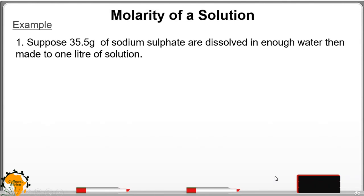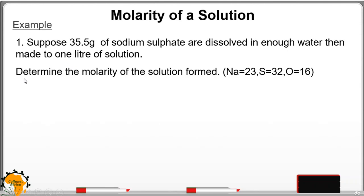For example, suppose you have 35.5 grams of sodium sulfate dissolved in enough water, then made up to 1 liter. Determine the Molarity of the solution formed. Since Molarity is the number of moles in a liter, we need to convert the number of grams of sodium sulfate into moles. Because we already have 1 liter, we are sorted on the volume side.